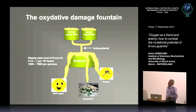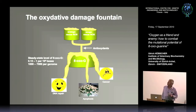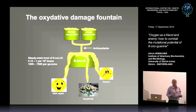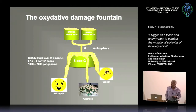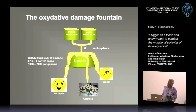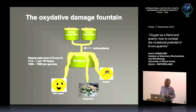This textbook slide I show students illustrates an oxidative damage fountain: we have a capacity to deal with a certain amount of 8-oxoG, however if that overflows, we have three possibilities — apoptosis, cancer, and DNA repair. This is what I'd like to show today: how the cell manages to repair thousands of 8-oxoG lesions in every cell every day.